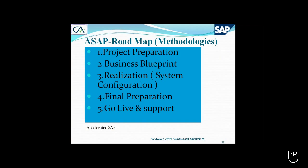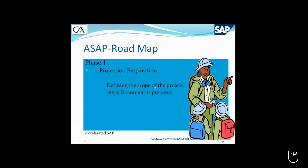Each phase consists of many activities. The first phase is project preparation. In the project preparation phase, we identify requirements before we commence the project. The project manager keeps the project scope and discusses it with each team lead, who then plans their work. During this phase we also prepare an as-is document — meaning the existing system, as it currently stands, is studied and documented.